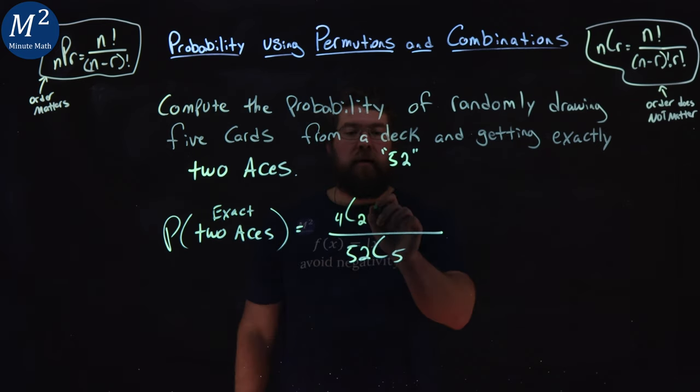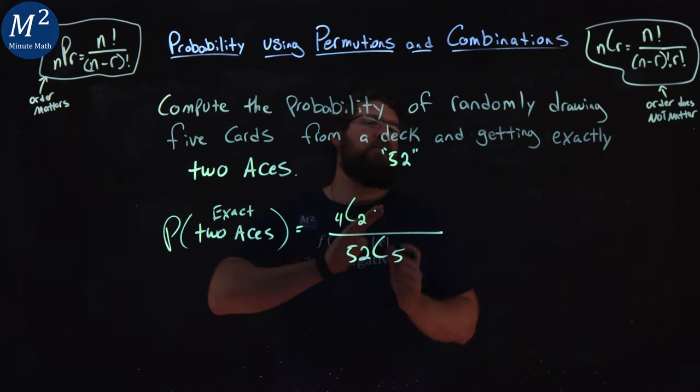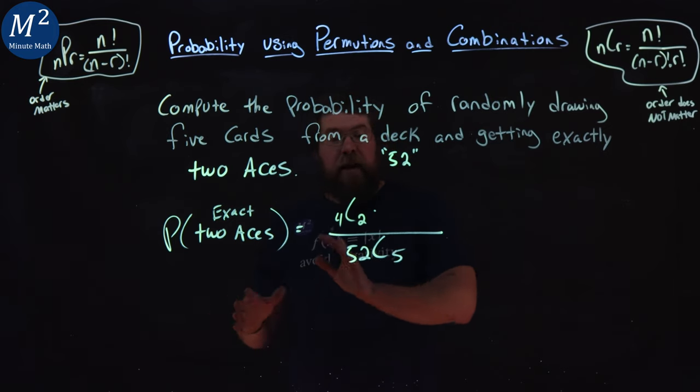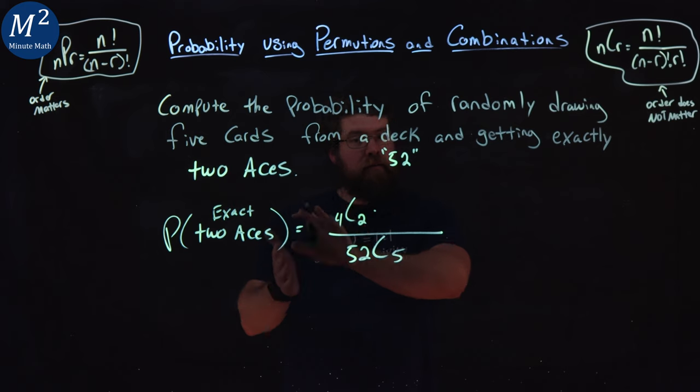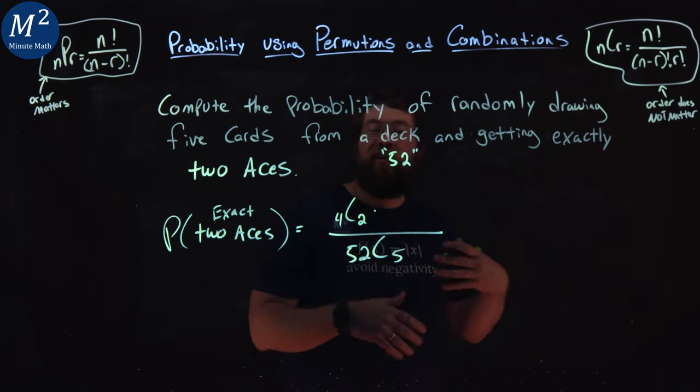Four choose two in our numerator. But then we're also multiplying out by what's left in the deck. So two of them have to be aces, there's four aces there. And how many cards are not aces?